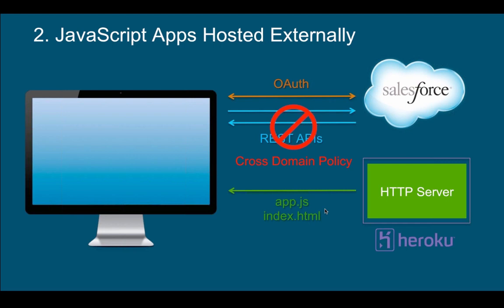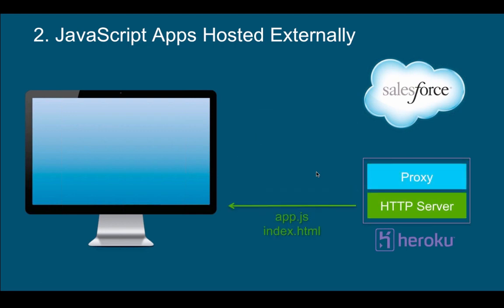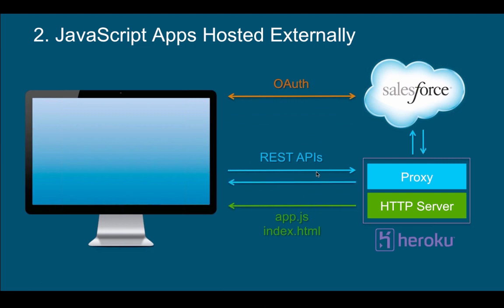However, there's a problem — you're going to run into the cross-domain policy. By default, a browser can only communicate back with the server from where the application was downloaded. Trying to go to another server gives you a cross-domain policy error. So practically, the way this works: you load the application, do your OAuth authentication, and when you need to access data, you make REST calls not directly to Salesforce but back to your own server. That server plays the role of a proxy — it makes the request on your behalf to Salesforce and sends the data back.